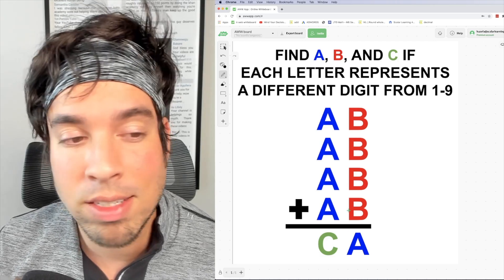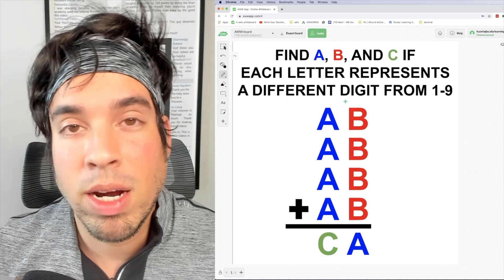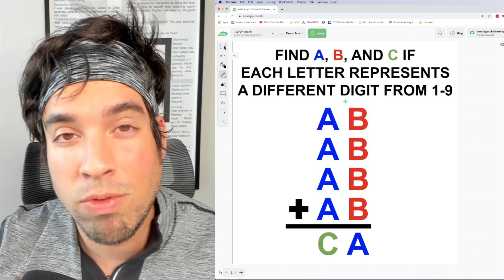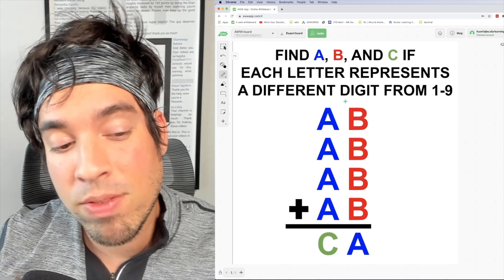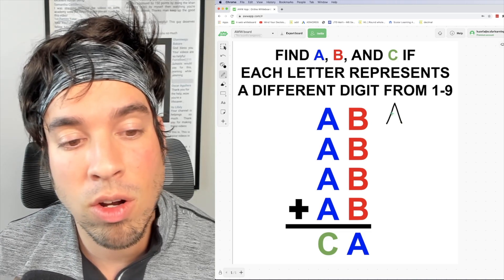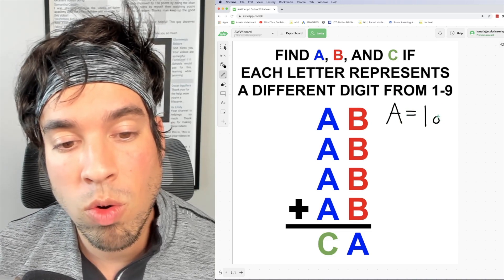Because if a were three, right, 30 plus 30 plus 30 plus 30 whatever the ones digit is, it's going to be over a hundred when you add those up and we've got a two digit sum so that doesn't work. So that means that a can only be one or two.